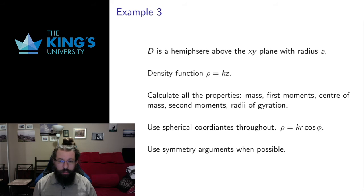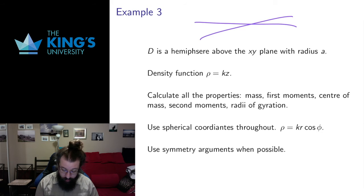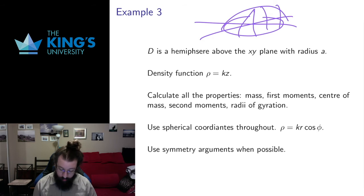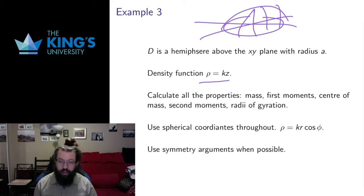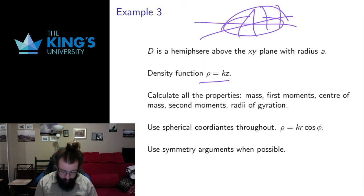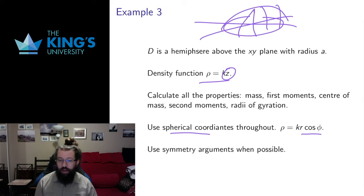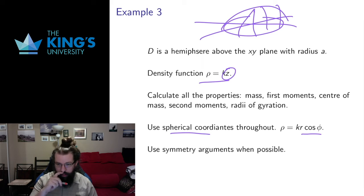Now let me do some examples in R3. I want to consider a hemisphere of radius a sitting above the xy plane — half a sphere of radius a — with density function rho equals kz. I want to calculate all of its properties: mass, first moments, second moments, center of mass, and radius of gyration. Since it's a half sphere I want to use spherical coordinates, which means changing z into r cos phi. I'll use symmetry arguments whenever available to simplify the work.